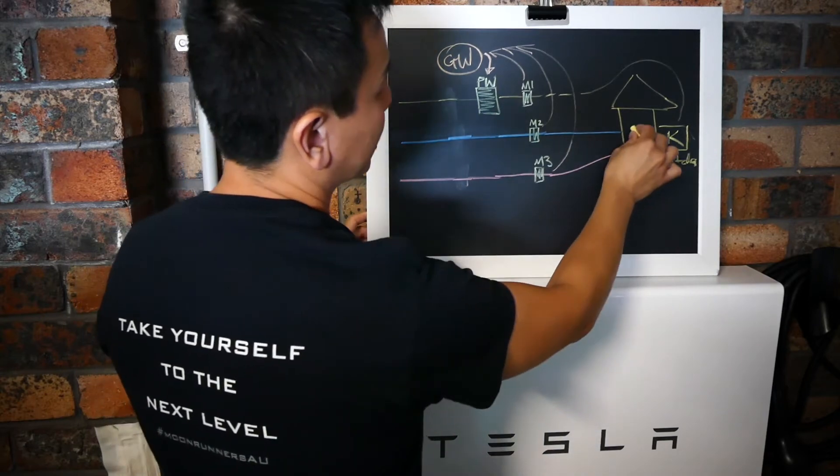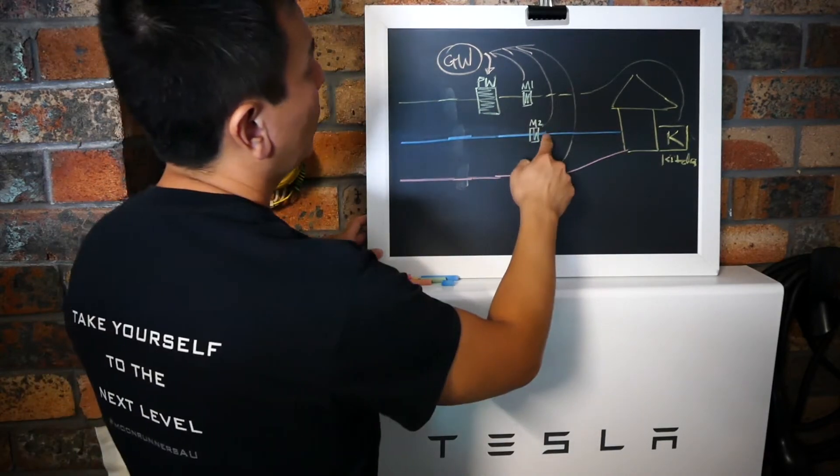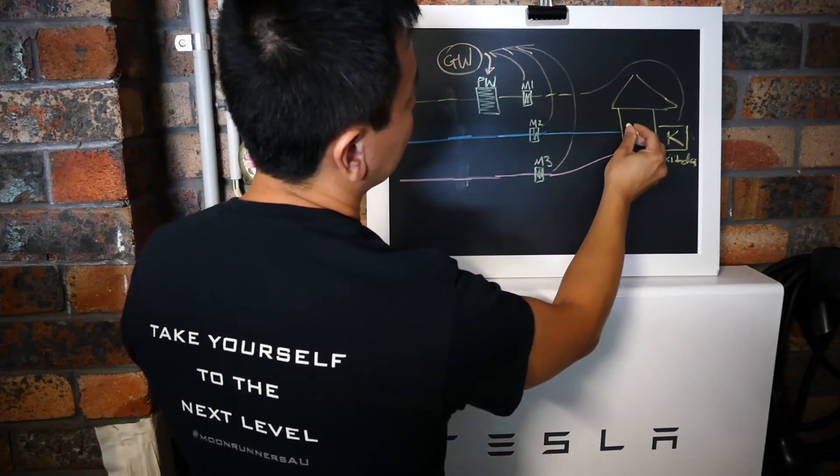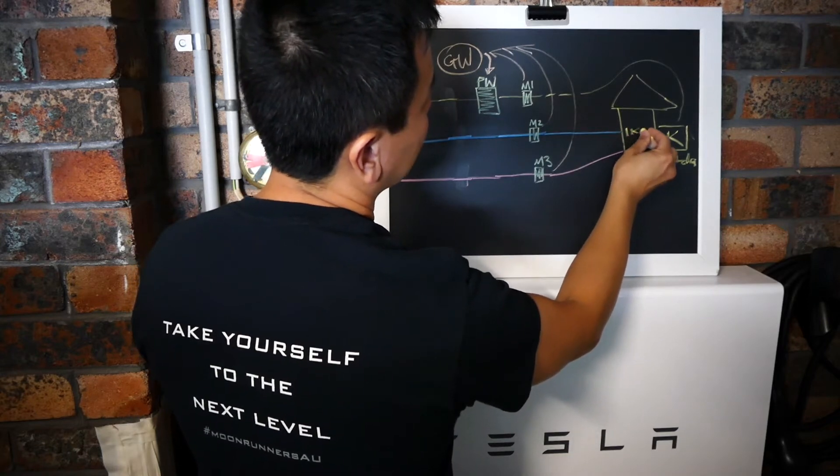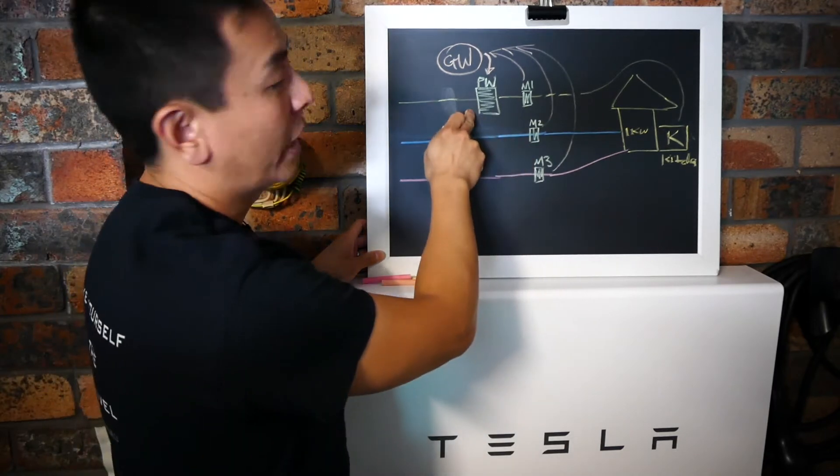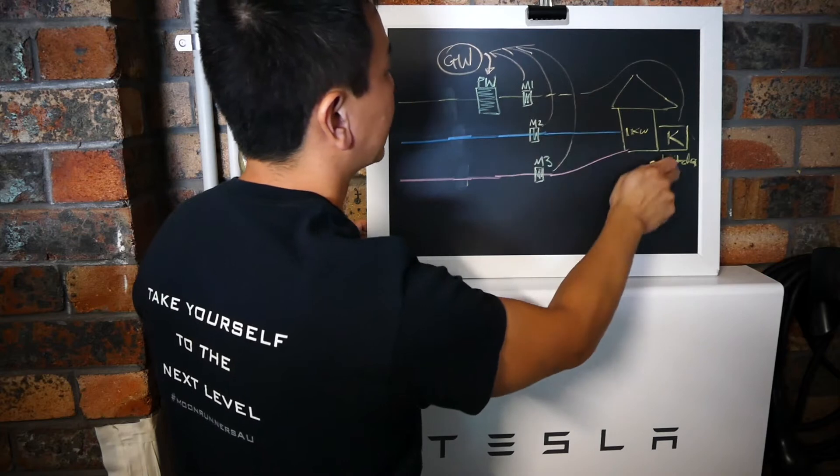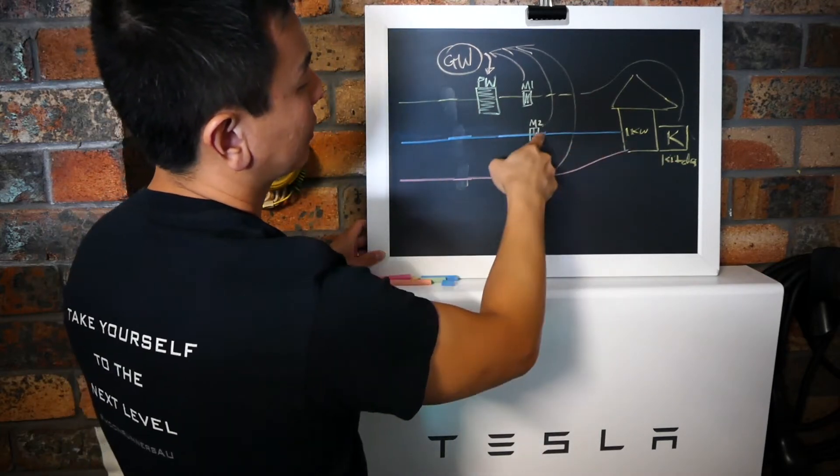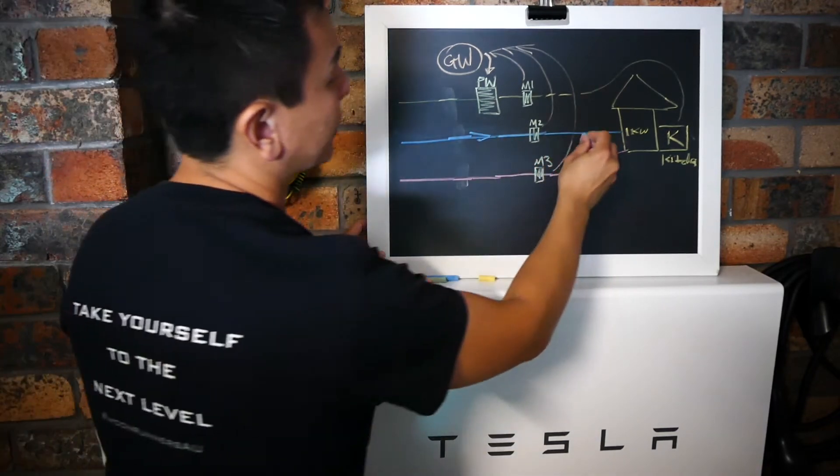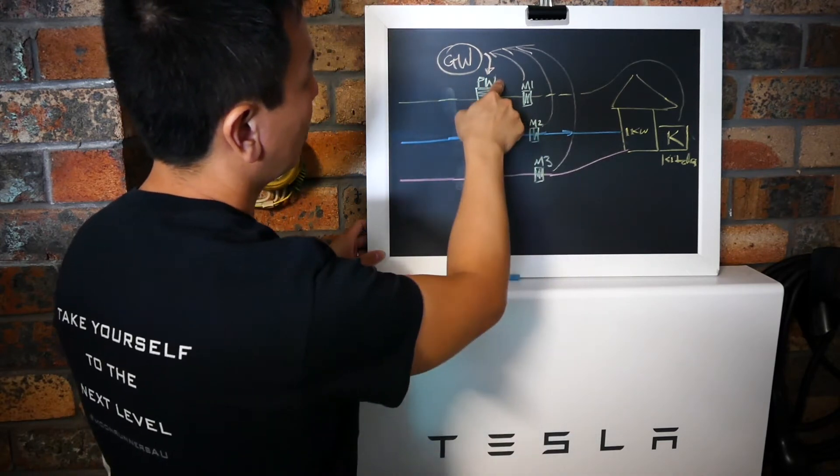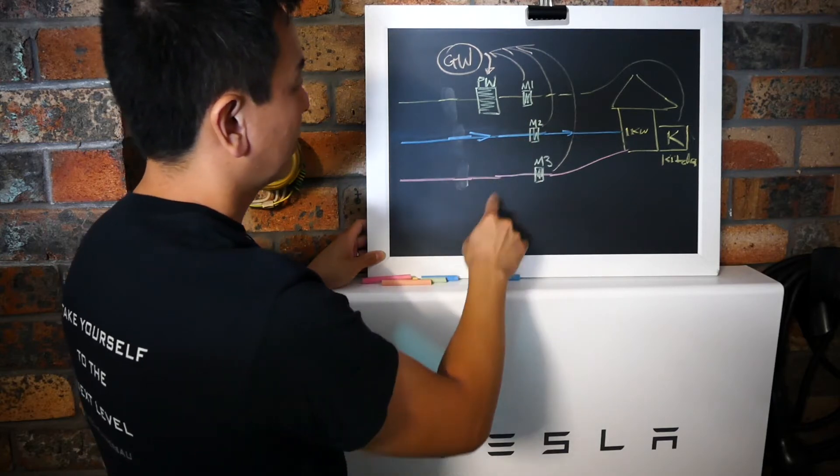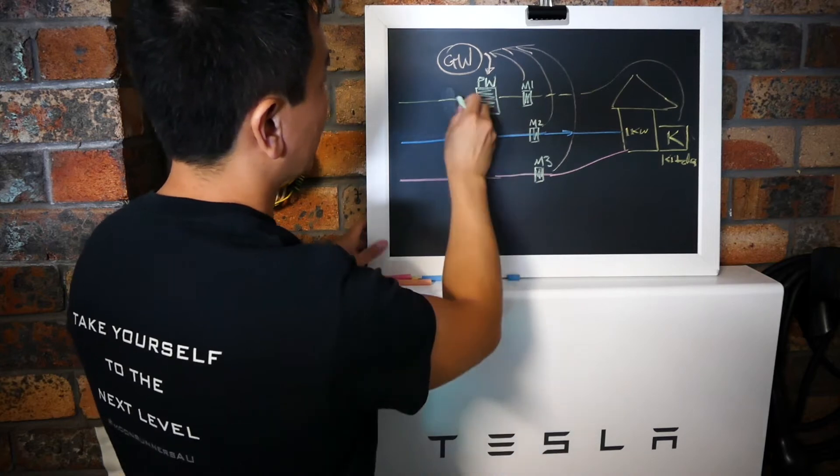If you want to run your computer for example that is on phase number two, what happens is that the power comes from the grid. So just for example, the computer is using say one kilowatt. I know it doesn't use that much, but just for simplicity sake it's using one kilowatt. So what actually happens is because the Powerwall actually gives energy only to the single phase to the kitchen, the rest of the house from this phase will draw energy from the grid. This is important. So it comes from the grid, but the Powerwall by the gateway sees the energy coming from the grid, so it'll tell the Powerwall to actually discharge this way.